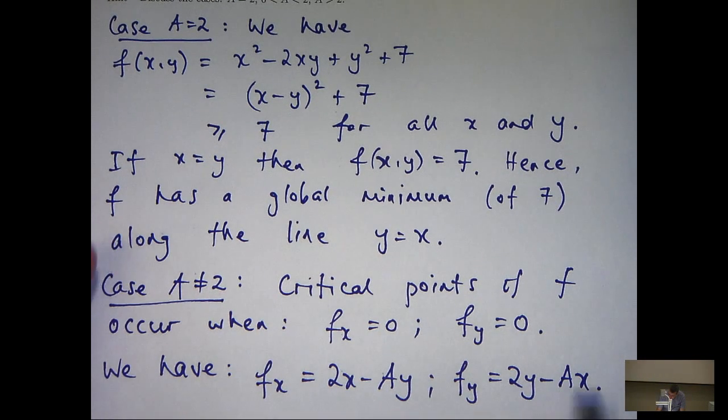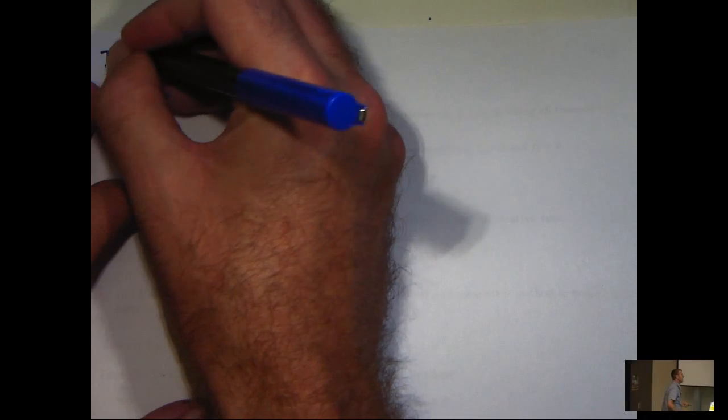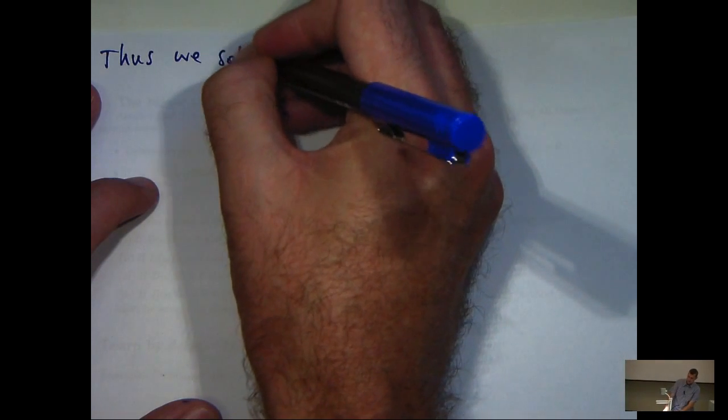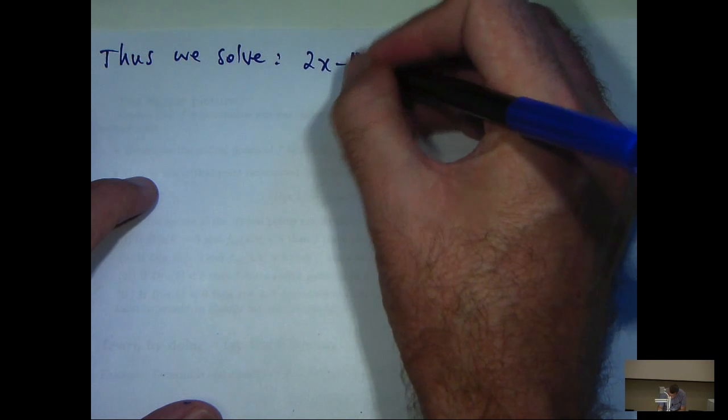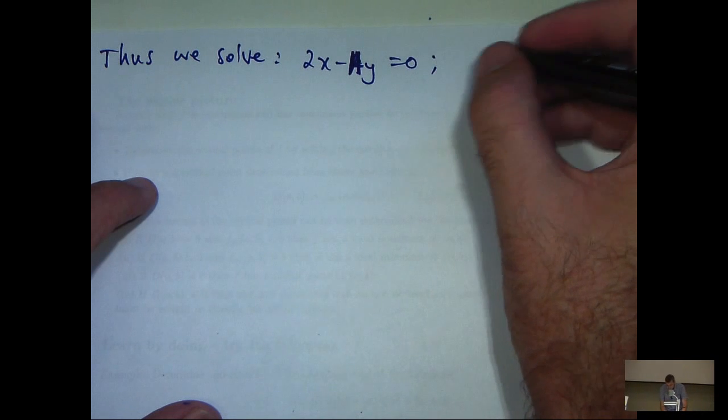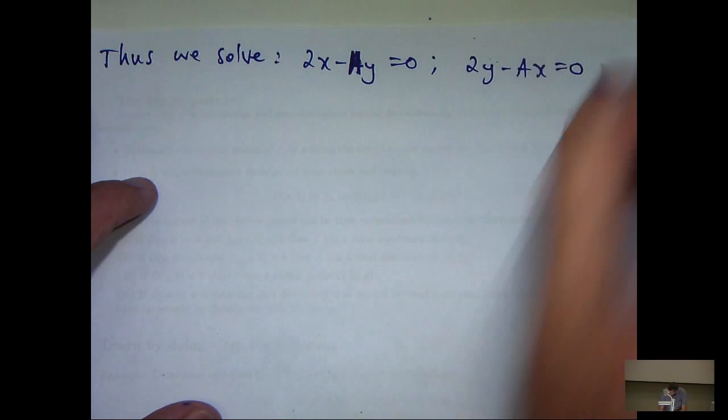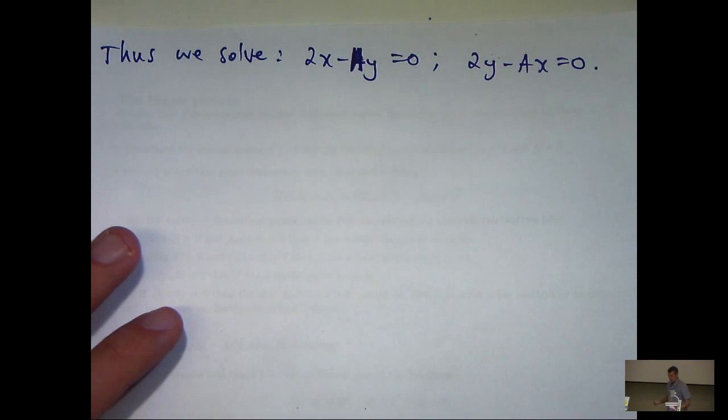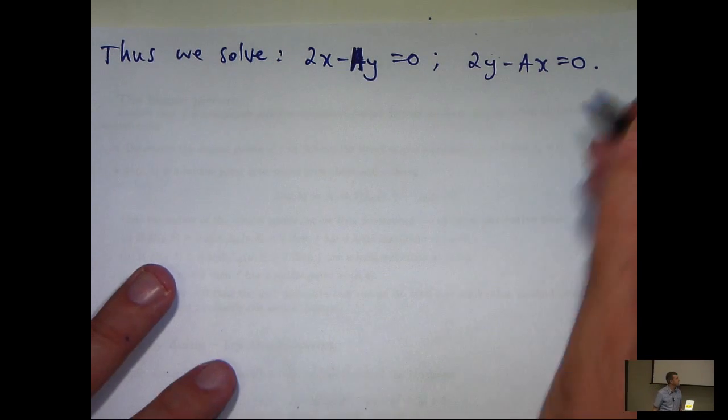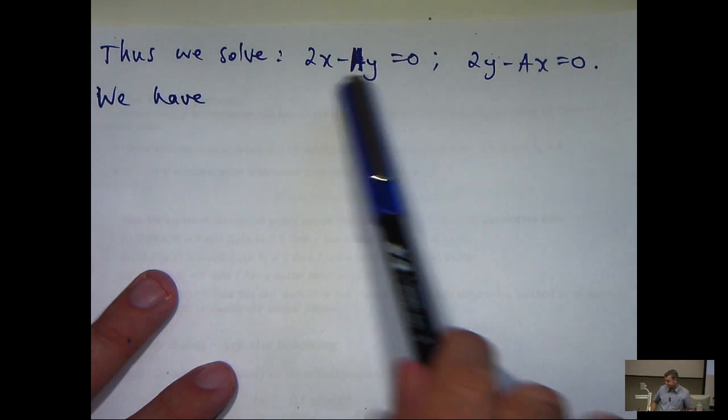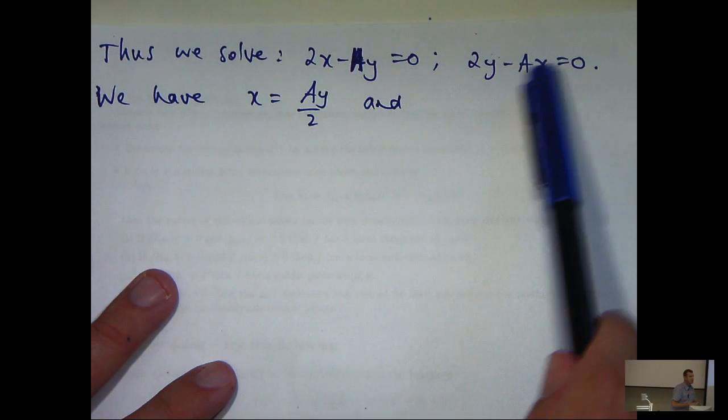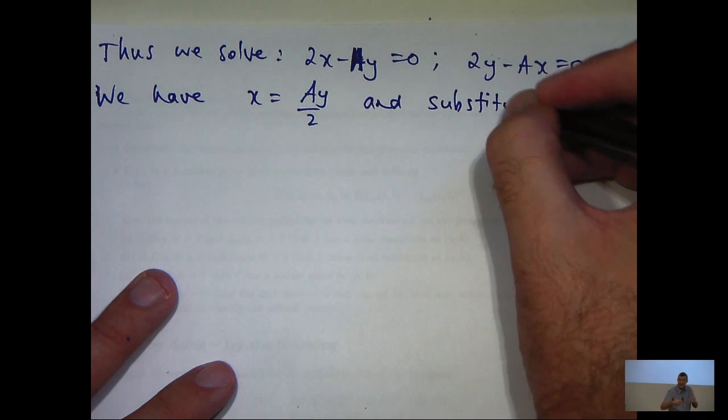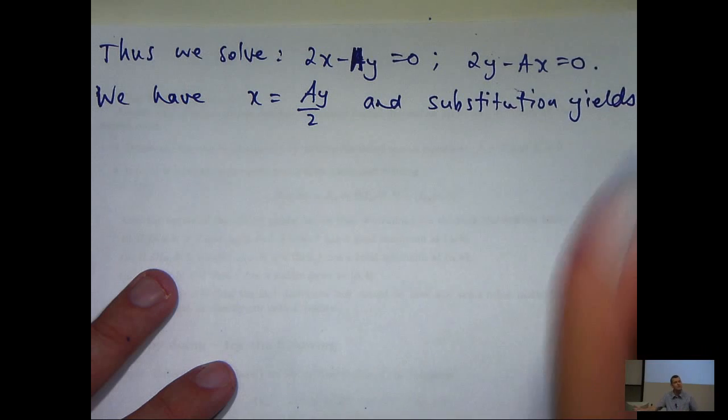We set both of these equal to zero and solve. Two simultaneous equations. We can solve these by substitution. Just rearranging the first equation and substitute in here for x.